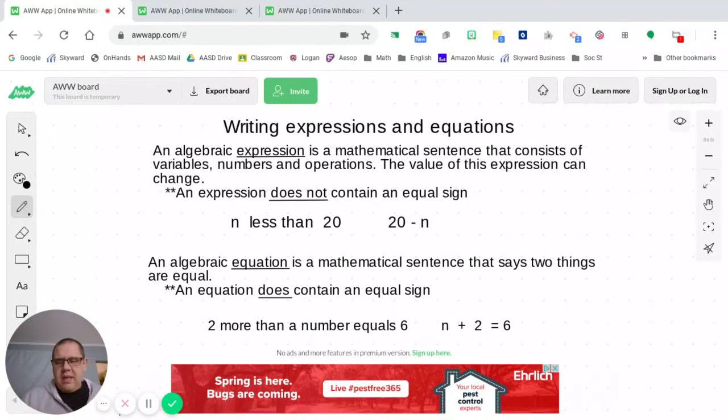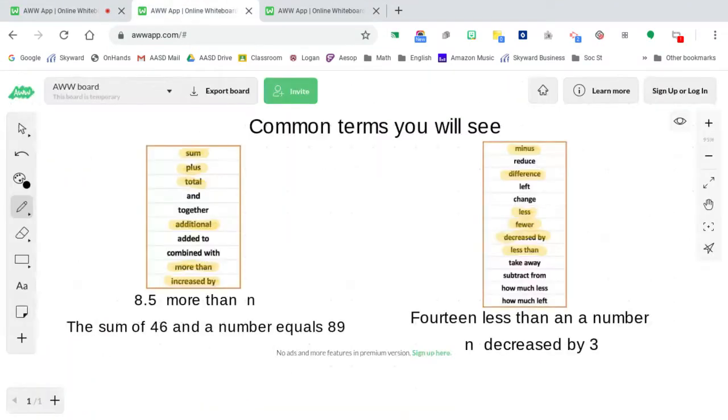And so when you break that down, it says N plus two equals six. Because we know that when we say more than, it sounds like an addition word. So that's actually what we're going to get into next.